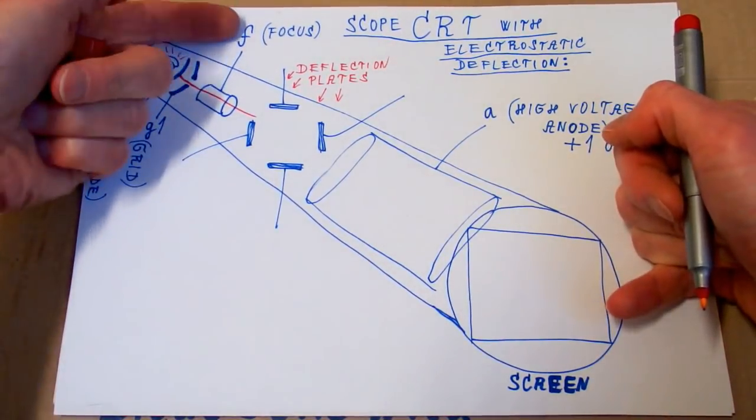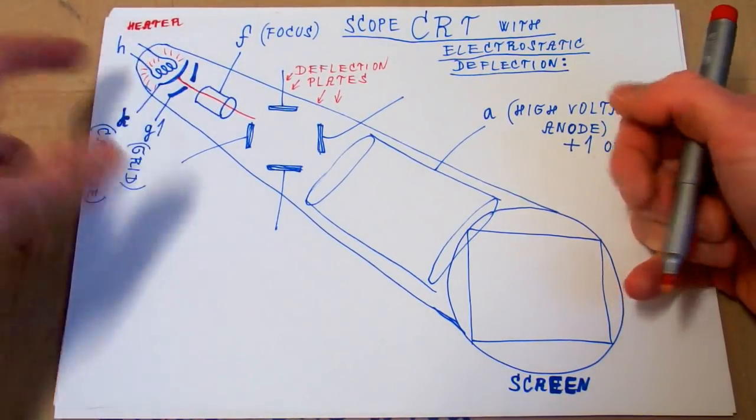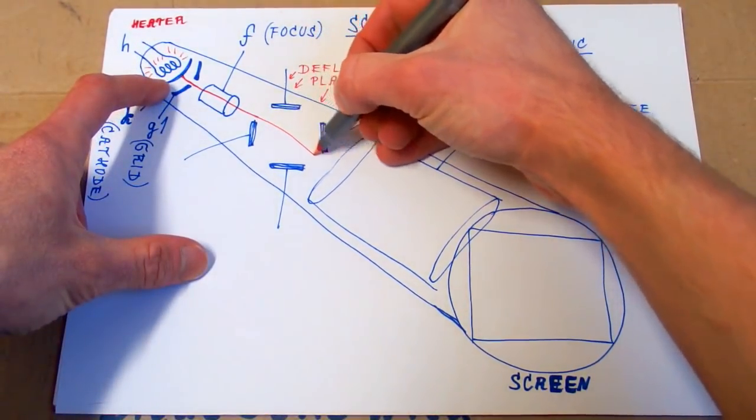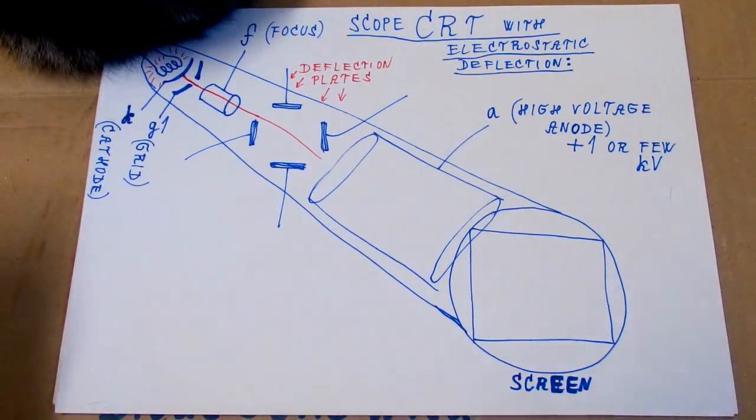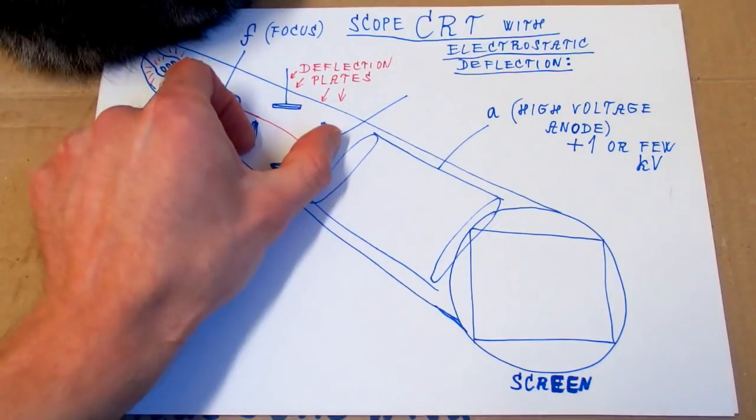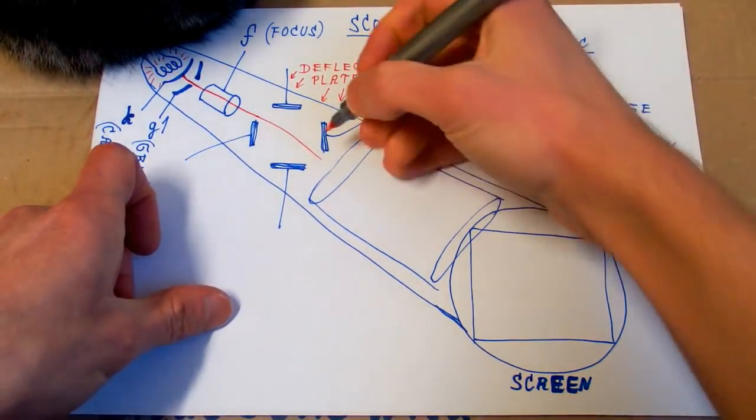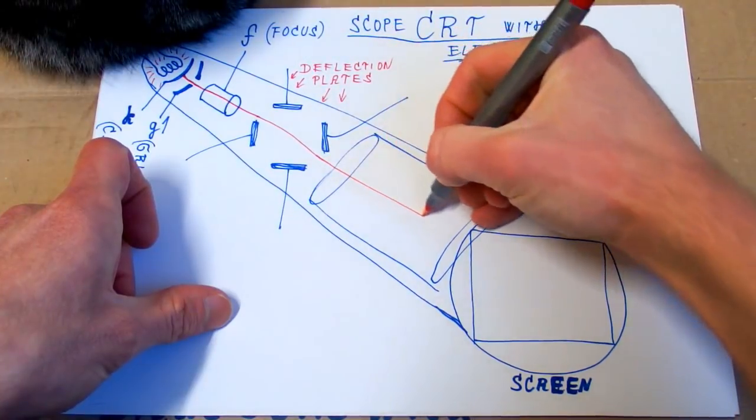Then there is some focus electrode to focus the beam into just a narrow beam of electrons. The focusing electrode is usually a cylinder, a hollow cylinder. Then it goes into the deflection plates. There are four of them. Two vertical and two horizontal. They are in pairs.